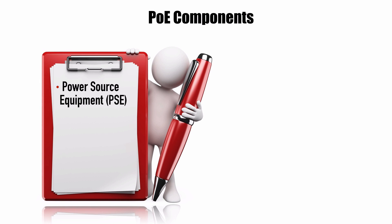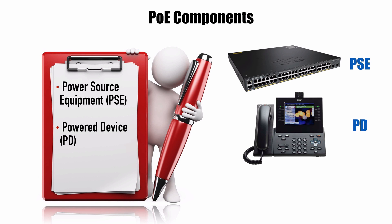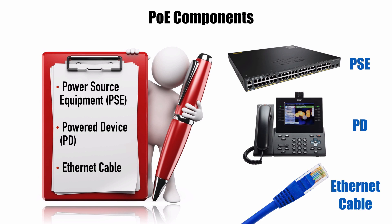The first term is PSE — Power Source Equipment. This is the device that's sourcing the power, like the name suggests. An example would be a Cisco Catalyst switch that supports Power Over Ethernet. Another term is the powered device, the PD. That could be a Cisco IP phone, a video surveillance camera, or a wireless access point. And with the Internet of Things evolving, we're having more and more devices that can connect into our network. The ethernet cable is the connective tissue that connects the device with the network, providing not only data but also power.